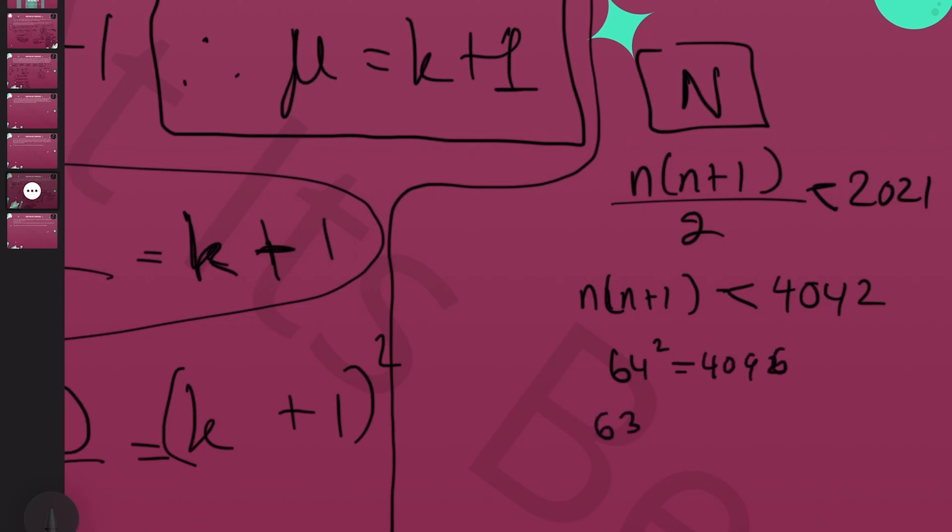Let's say we have 64 squared, we know that equals 4096, because it's a power of two. If we go for 63 times 64, that equals 4032, which is fine because we're under 4042. We're going to take n as n times n plus one over two, for all values of n between one and 63. That gives us a total of 63 possibilities.